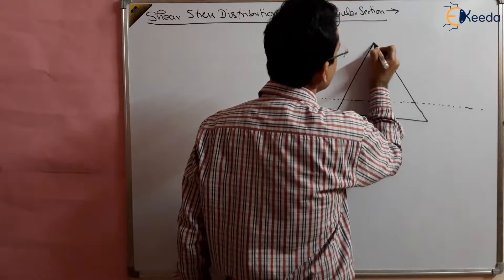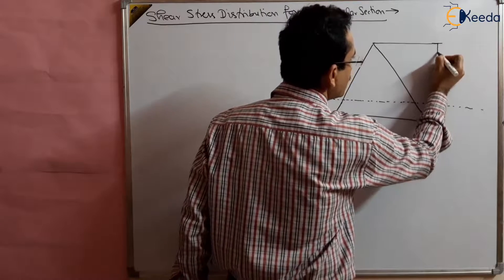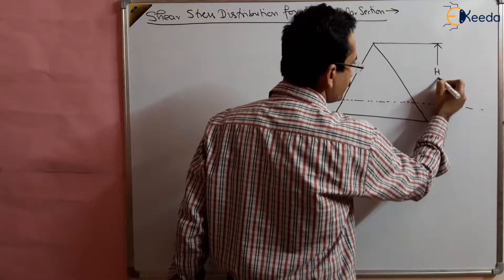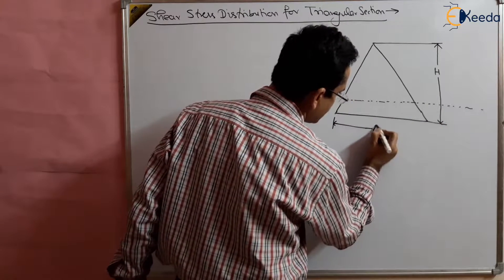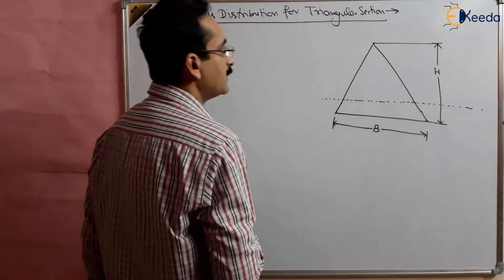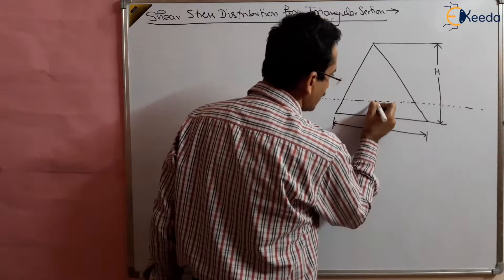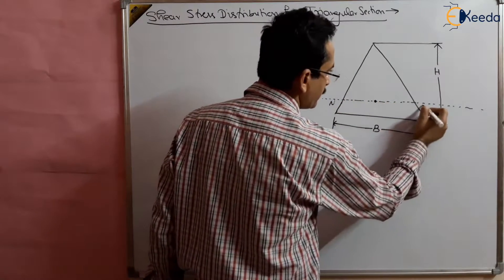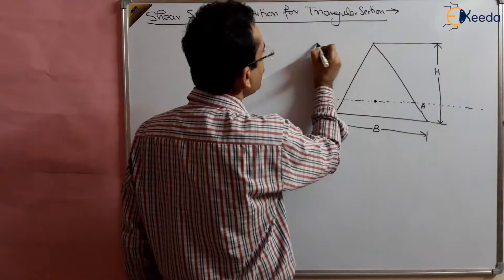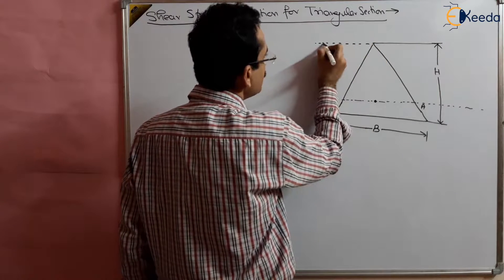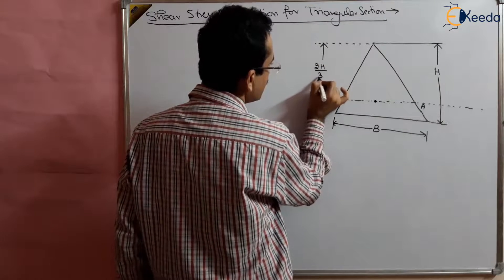Suppose capital H is the height of this triangle and capital B is the base width. The neutral axis lies at a distance of H/3 from the base or 2H/3 from the apex — so 2H/3 from the apex.